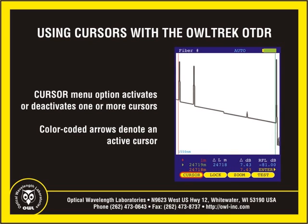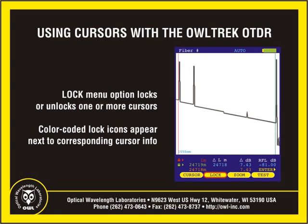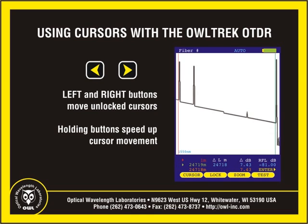The cursor menu option activates or deactivates one or more cursors. The lock menu option locks or unlocks one or more active cursors in their current distance position. When one or more active cursors are selected and not locked, the left and right arrow buttons move the cursors left and right. Holding these buttons speeds up the cursor movement on the screen.